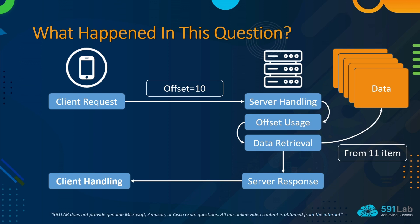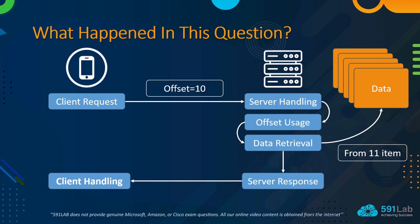So the client gets a subpart of the whole dataset, processes it, then gets more, processes it, and so on. Using offset, you can set offset to 0 with a limit of 100 to get the first 100 pictures or devices. Then next time from 101 to 200, then 201 to 300 — 100 items per request. Let me give you some detail about how to use offset in this scenario.